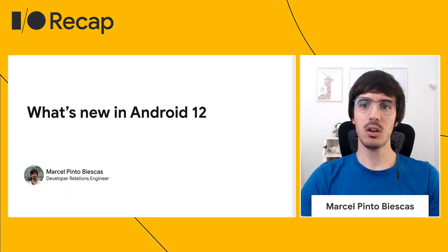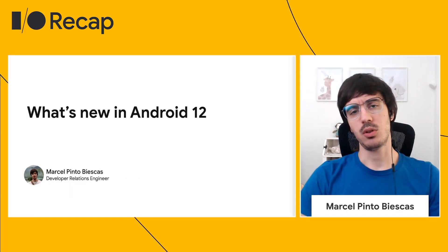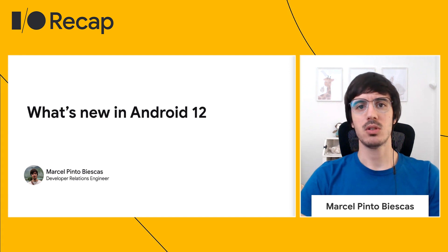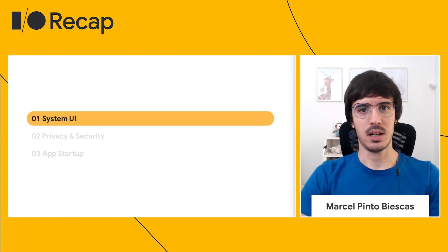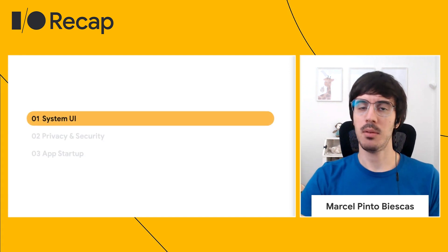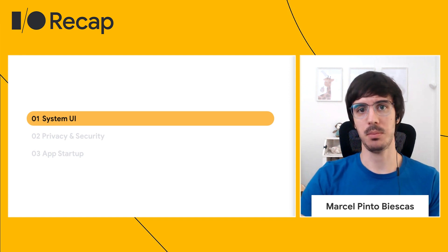We will quickly cover some of the new changes on Android 12 that were announced during I/O. Let's start by covering three main topics today: System UI, Privacy and Security, and App Startup.